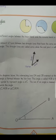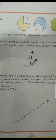In the diagram below, the intersecting lines OA and OB intersect at the point O, and an angle is formed between the two lines. This angle is called AOB or BOA.